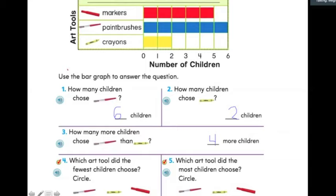The next question, which art tool did the fewest children choose? And we're going to circle it. So, I'm going to look back at my bar graph and I see that crayons has the shortest bar. So, that's one way I can figure out which has the fewest. Another way I can figure it out is by looking at the numbers again. I know markers has five, paint brushes got six votes, and crayons had two votes. And I know that two is less than six and five. So, the fewest was crayons.